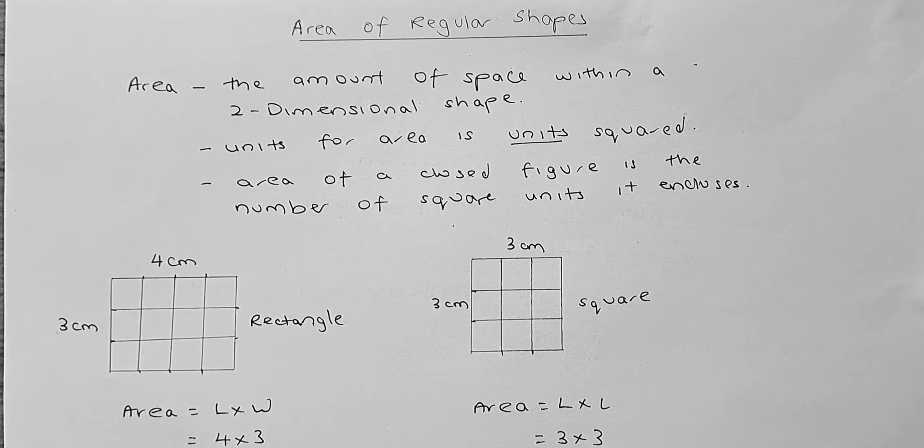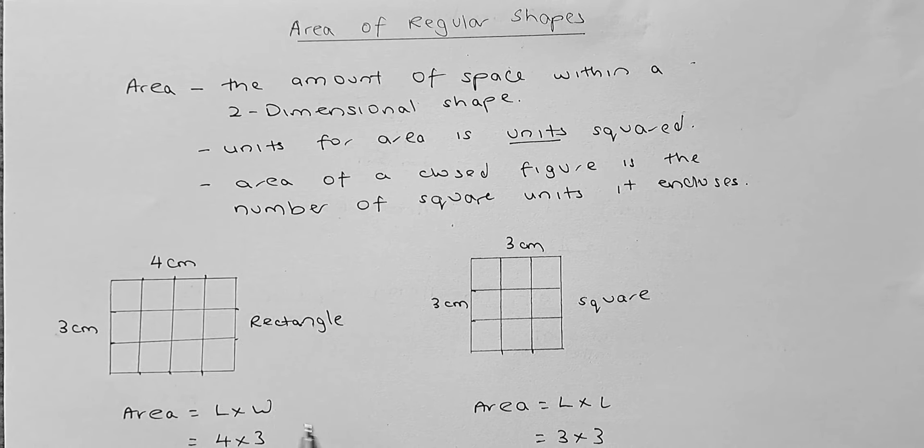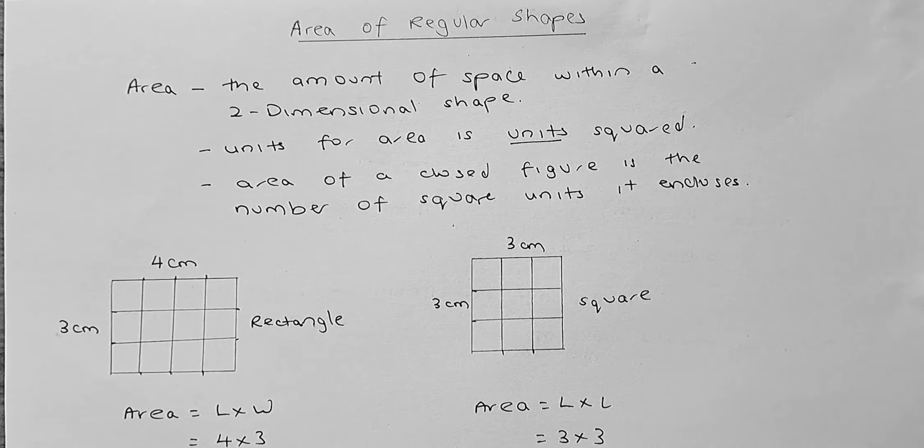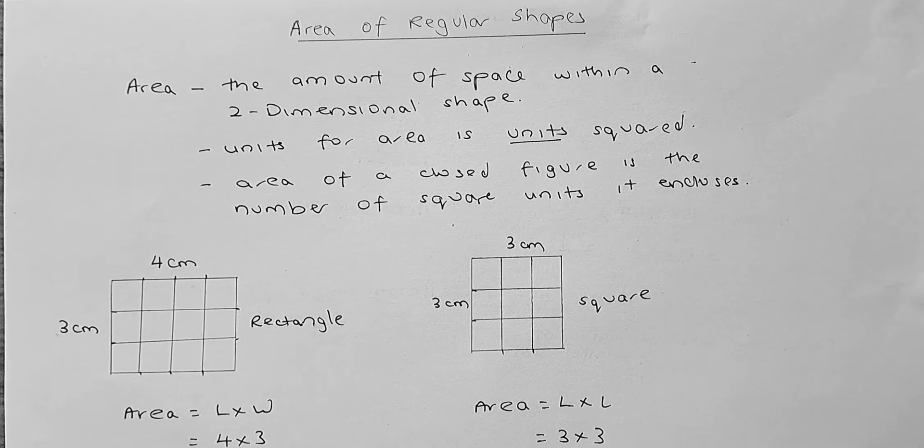In other words, if you break them down into 1 cm squared, if you count the number of squares, there are all together 12 square units in a rectangle of length 4 cm by 3 cm.